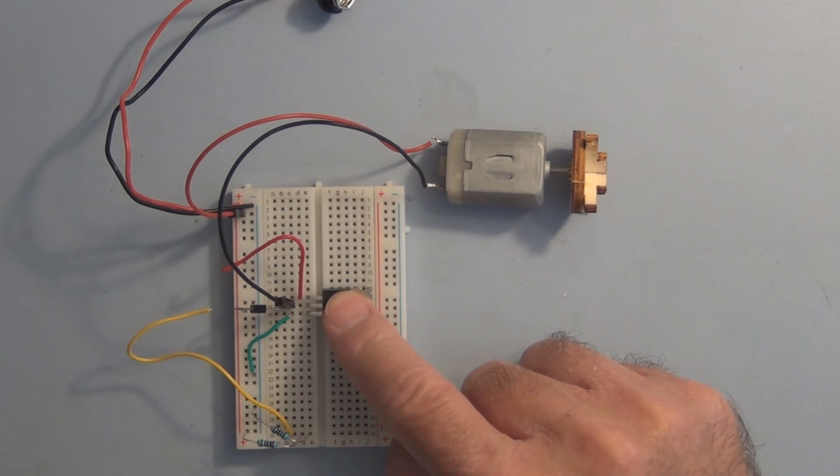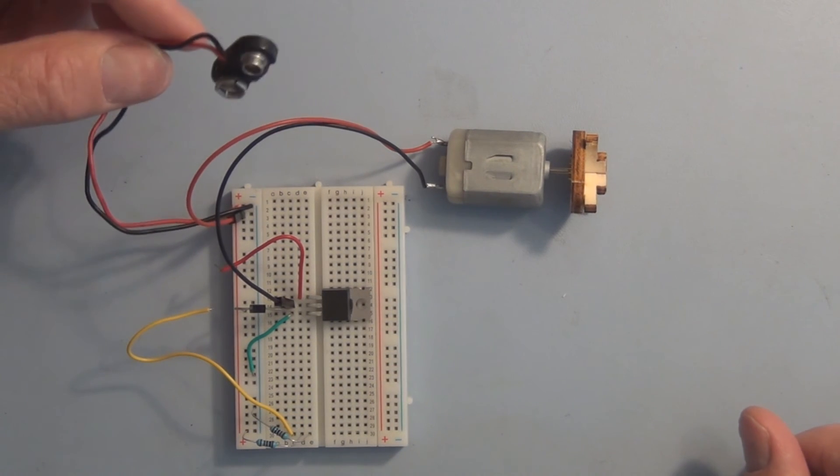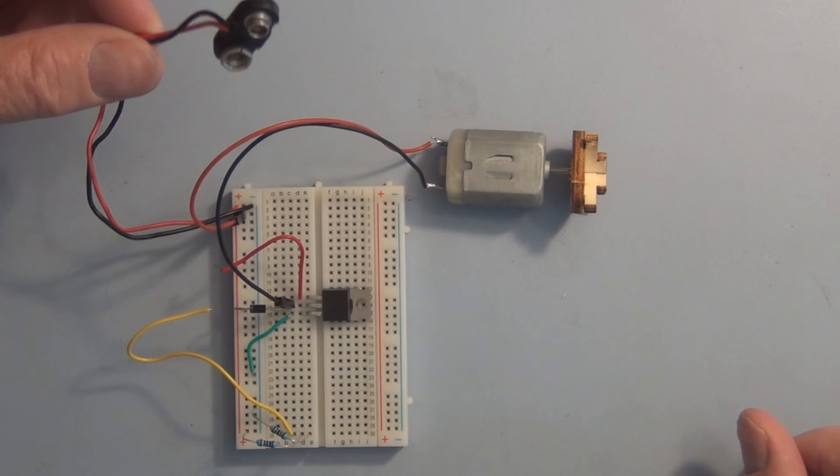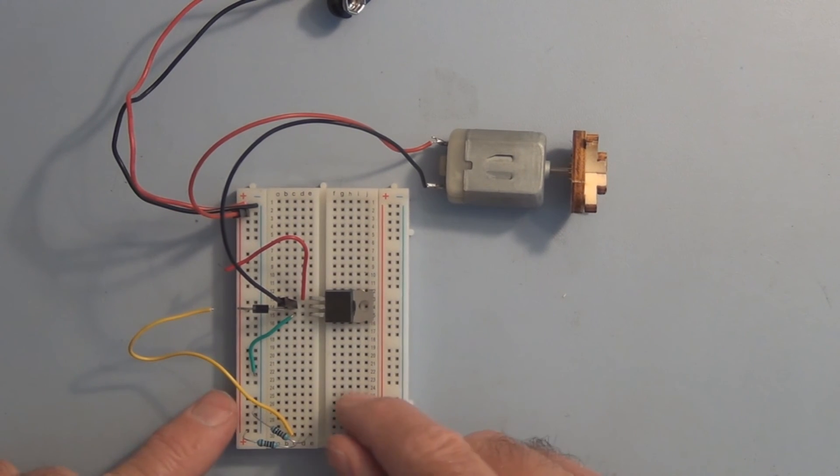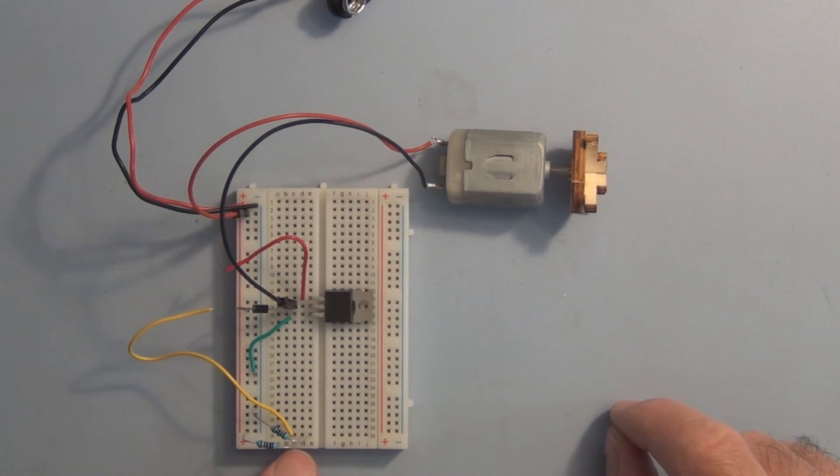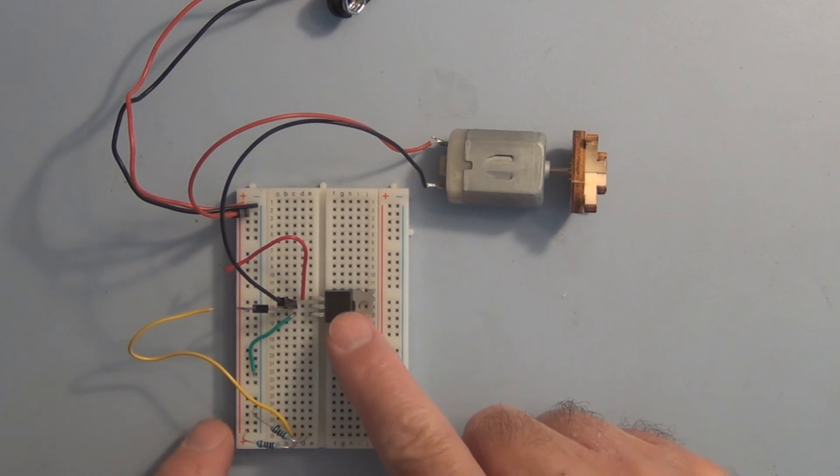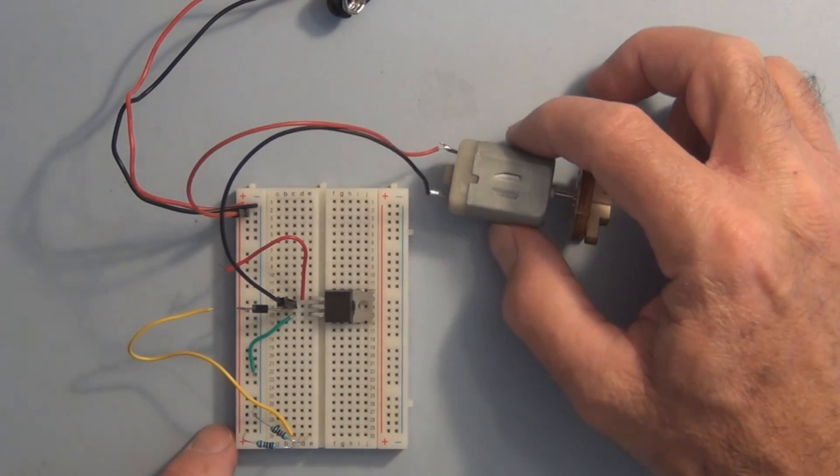We've got the N-channel MOSFET and I've got a 9 volt battery that I'm hooking up to the positive and the negative rails here. I've taken two 10k resistors in series. That way I can split that voltage and get 4.5 volts that I can apply to the gate to turn the motor on and off.